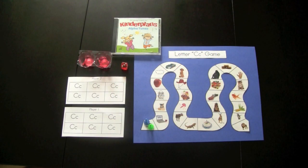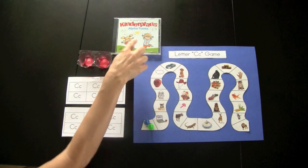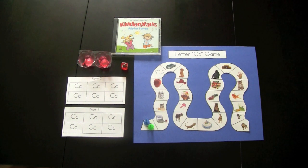This is called the letter C game. This would be placed in the Literacy Center after the children have been introduced to the letter C and its corresponding sound. This would be done through reading the reader Cool Clouds and also the pictures have been enlarged so the teacher can use these as a teaching base. And the song Cool Clouds on the Kinder Plans Alpha Tunes CD could also be used to introduce the letter C and its corresponding sound.